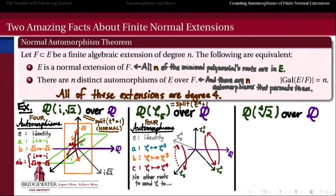We showed in a previous video that the automorphism group is isomorphic to the cyclic group of four elements. We can also say this is a normal extension over Q because it happens to be the splitting field of the fourth cyclotomic polynomial. Therefore the degree of the extension, 4, agrees with the number of automorphisms, also 4.